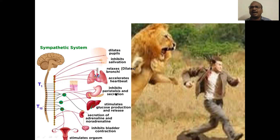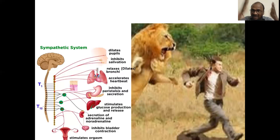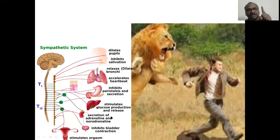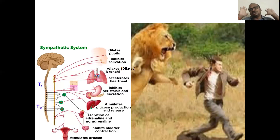Inhibits the peristaltic movement. All GI movements — not only GI movement but all GI secretions like HCl, saliva, acid, alkali, whatever it may be — all are inhibited. Even peristaltic movement is inhibited, so you cannot get motion, because peristaltic movement of the GI tract leads to motion. Stimulates the glucose production, and also glucose release into the blood because you require more and more energy. That energy comes from glucose only. More glucose production will be there in the liver and more release of glucose into the blood.